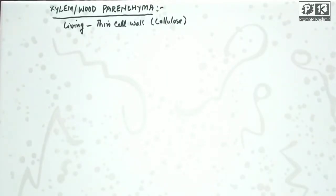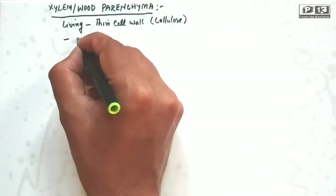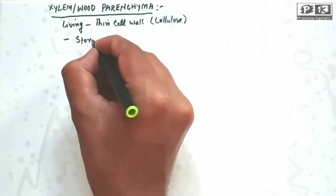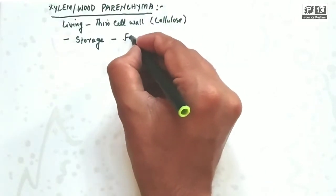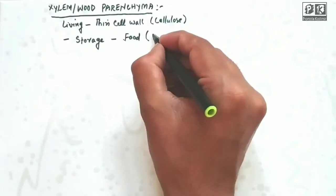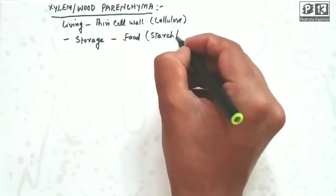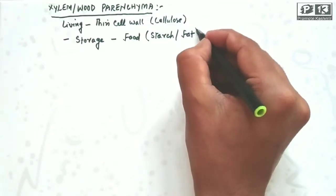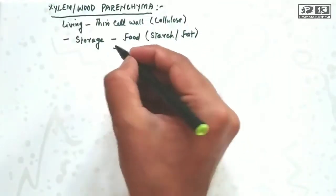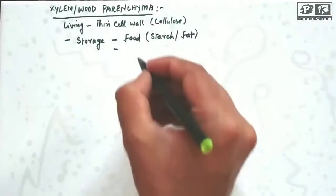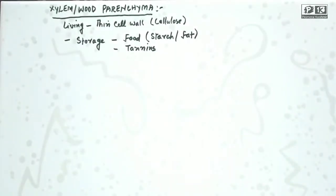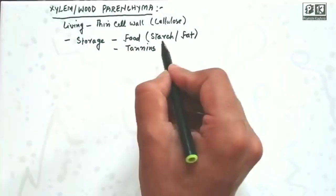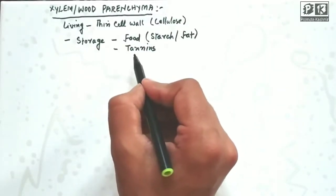Xylem parenchyma, also called wood parenchyma, is involved in storage. It stores food and also stores fat.